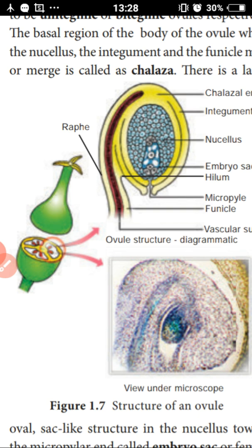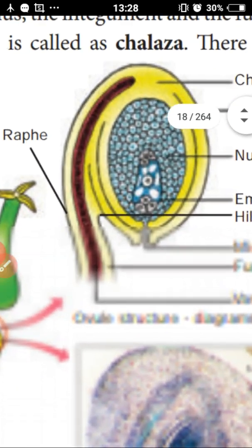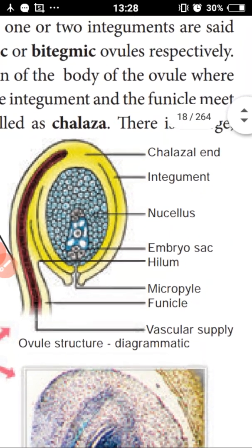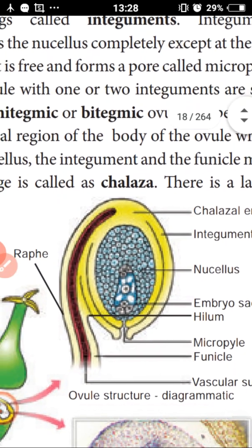The structure of the ovule — the ovule is also called Megasporangium, just as the anther is called Microsporangium. The ovule is protected by one or two coverings called integuments. These integuments form a covering layer around the ovule.